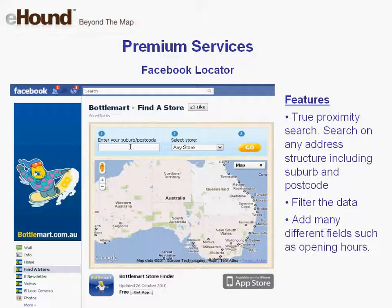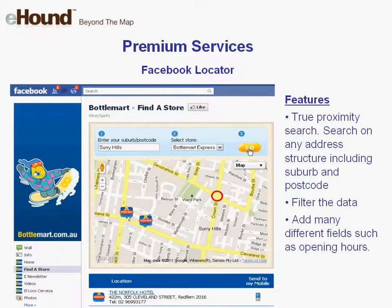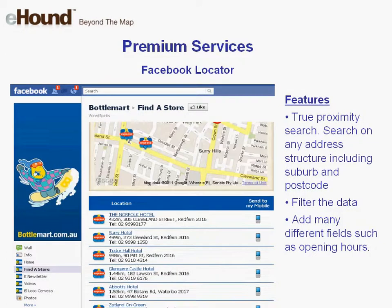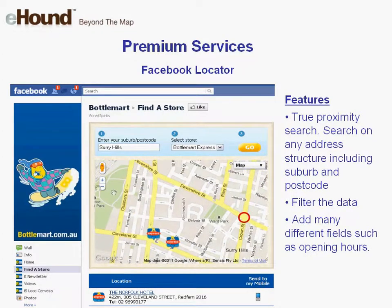Increasingly, brands are communicating with customers using social networking sites such as Facebook. Don't let these users get away — provide them a store finder too. Key benefits include a true proximity search to show the nearest store, results in kilometres or miles depending on the country, and the ability to add as much information as you wish such as opening hours and discount voucher deals. The product is available worldwide.